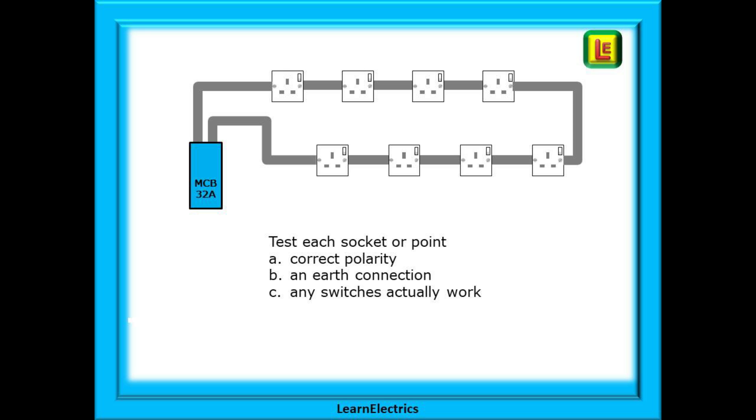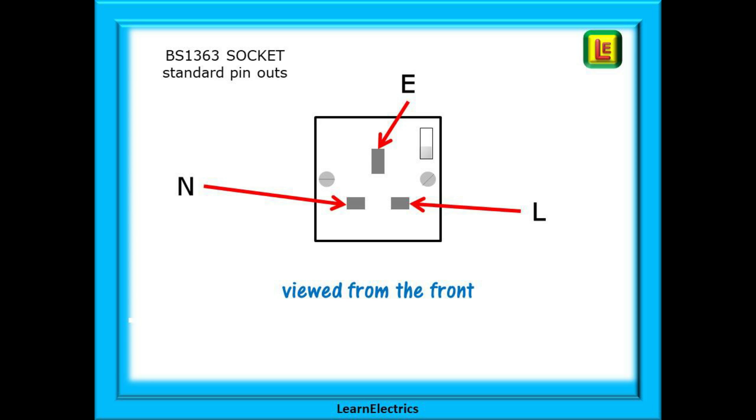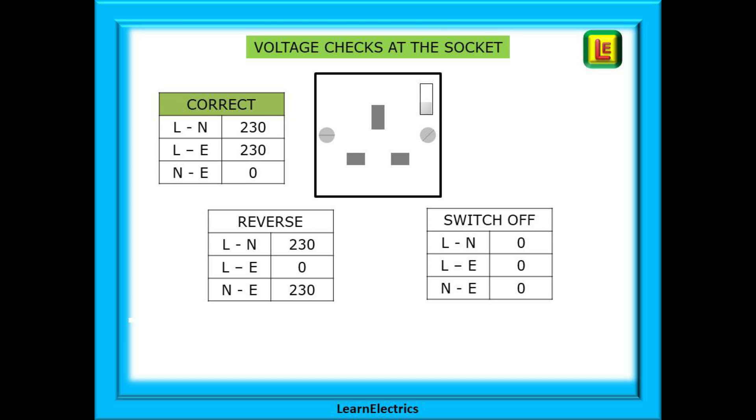A standard BS 1363 socket will always have the pin outs as shown, viewed from the front. From the user side of the socket, the live or phase is always on the right. Begin with checking the voltages at each socket. I prefer to use my test meter and a breakout plug as shown in a later slide. Some electricians will use a good quality plug top tester with LED indication for the health of each socket.